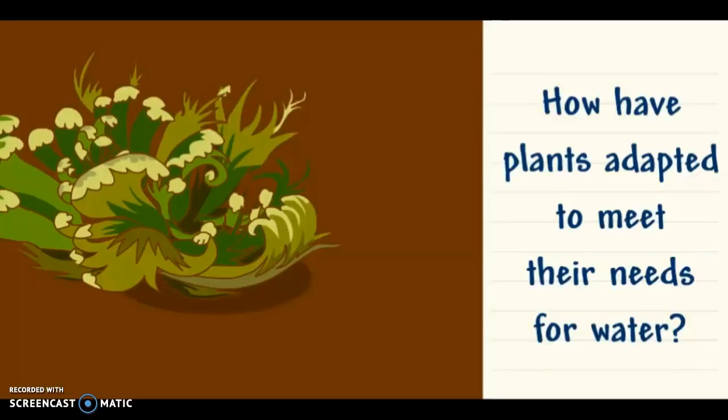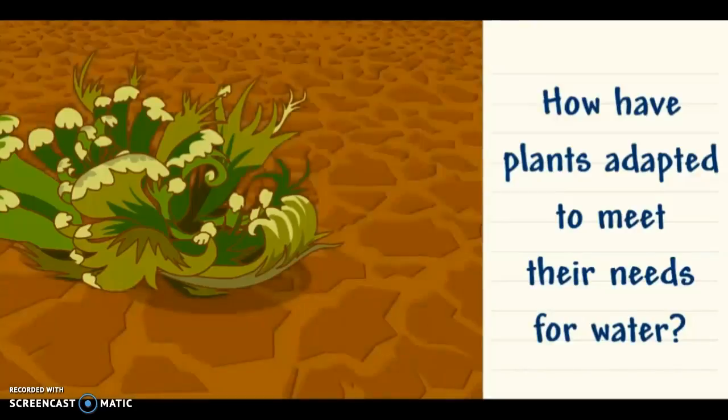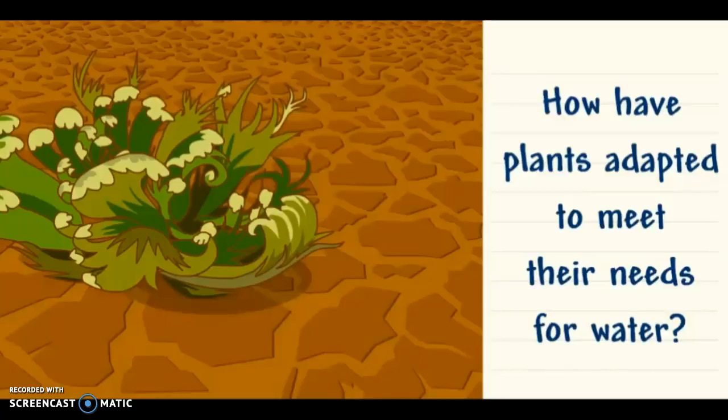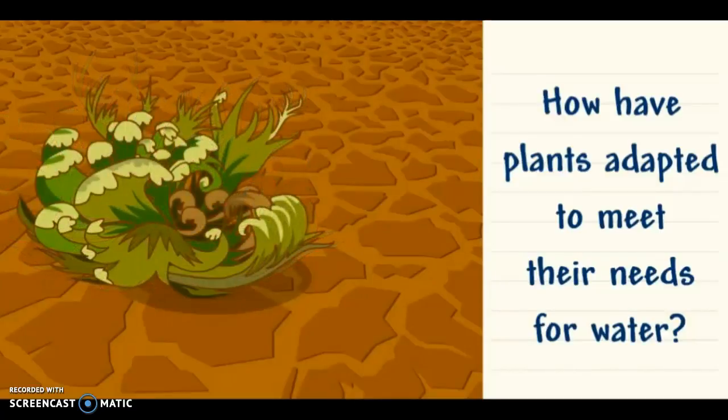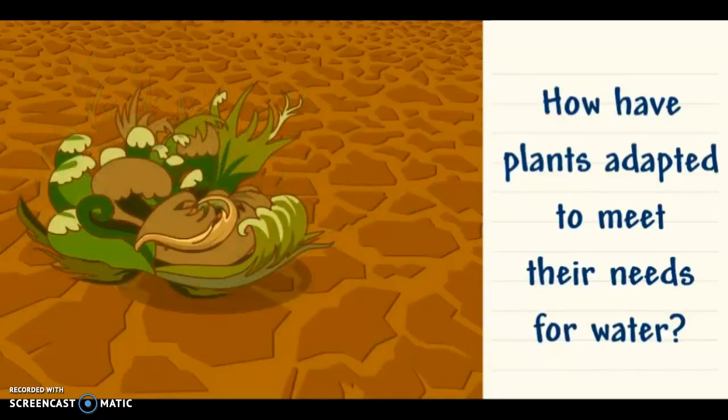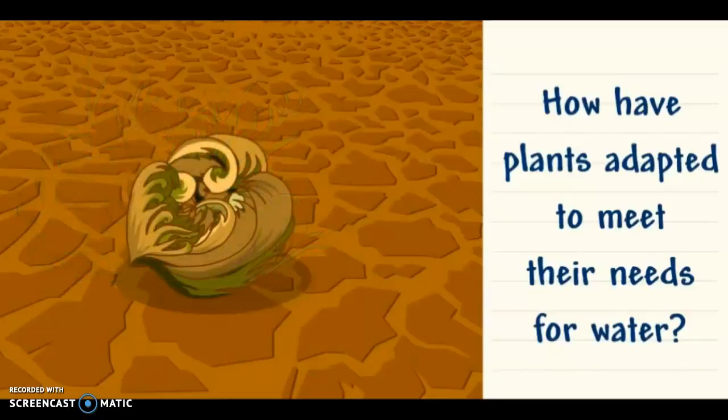The Rose of Jericho is a plant found in dry areas of the Middle East. During dry periods, the plant curls up. It can stay like that for years, until there's enough water for it to open and grow.